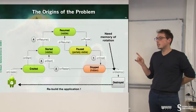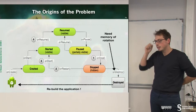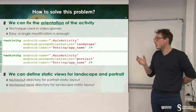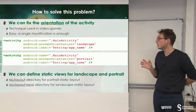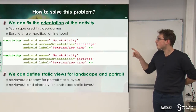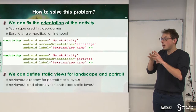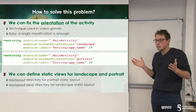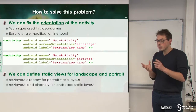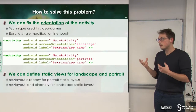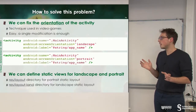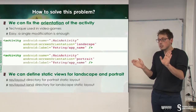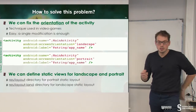Now that we understand that, we have to find a way to handle this. The first idea is to fix the orientation of the activity — for example, only authorize landscape. This is the technique used for games where you cannot rotate your screen as you want. But it does not solve our problem. We can also define views for portrait and landscape, but that doesn't solve our problem either, so we have to find another way.